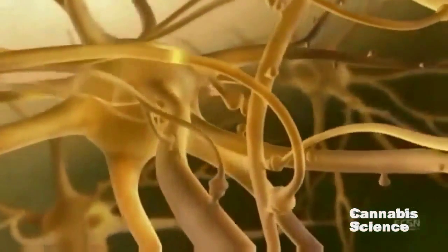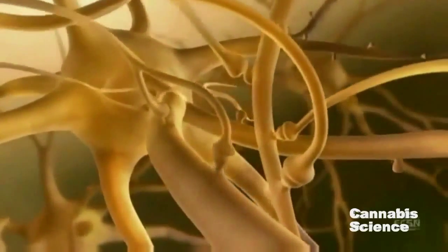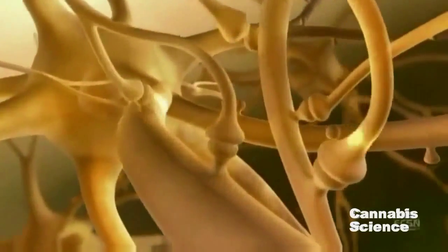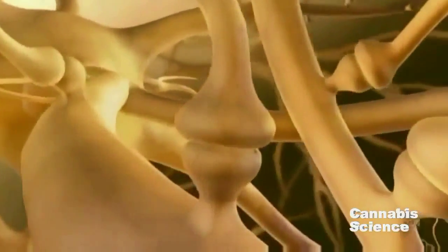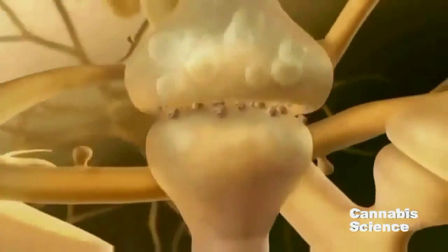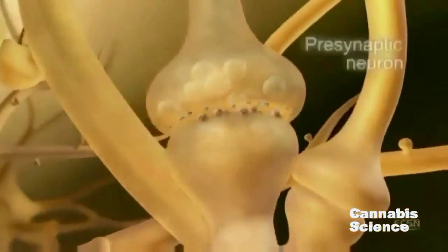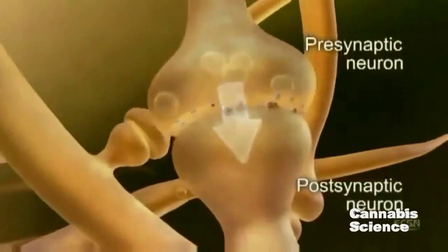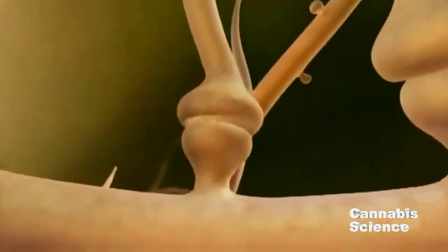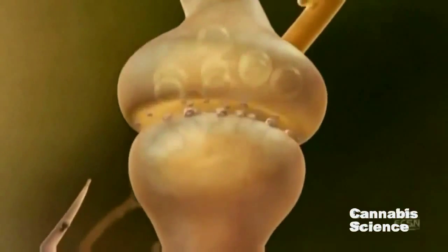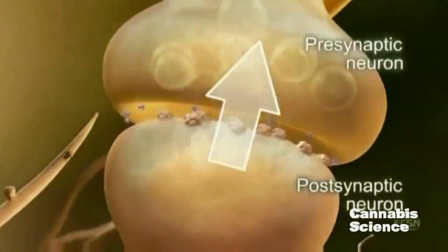Within the brain, CB1 receptors are among the most abundant G-protein-coupled receptors. However, in contrast to classical signaling, where information travels from pre- to post-synaptic neurons, the ECS uses retrograde signaling, where information travels from post- to pre-synaptic neuron.